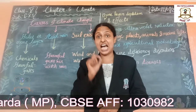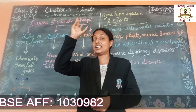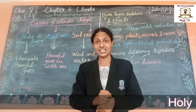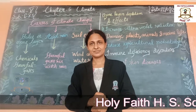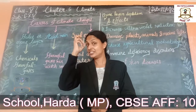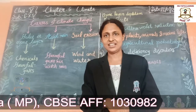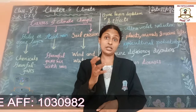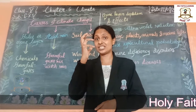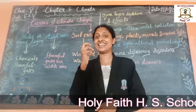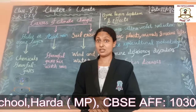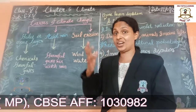This layer protects us from the ultraviolet rays from the sun. In the daytime you get sunlight from the sun, but the sun also produces ultraviolet rays. These are very dangerous and very harmful for living things.